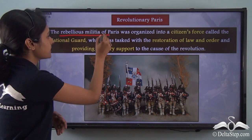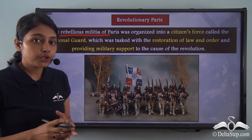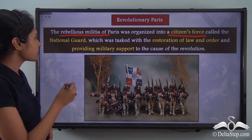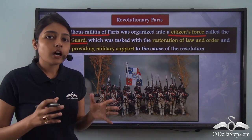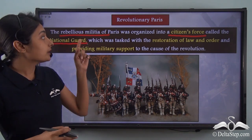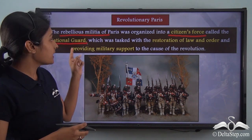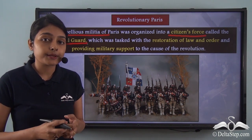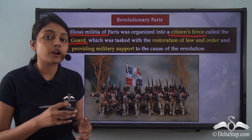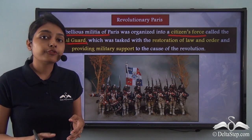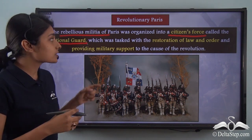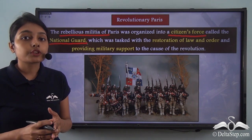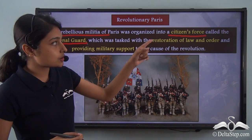After the storming of Bastille and the formation of the Paris Commune, the rebellious militia of Paris had to organize themselves. They organized themselves into a citizen's force called the National Guard. This National Guard, formed by the rebellious militia and revolutionaries, was beyond the control of the King and independent of him — it did not pay heed to what the King of France had to say. In fact, some soldiers who formerly belonged to the Royal Army also joined the National Guard because they sympathized with the cause of the revolutionaries.